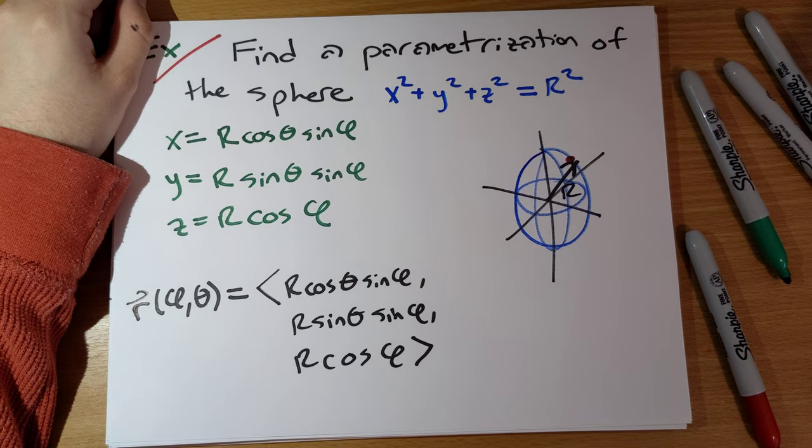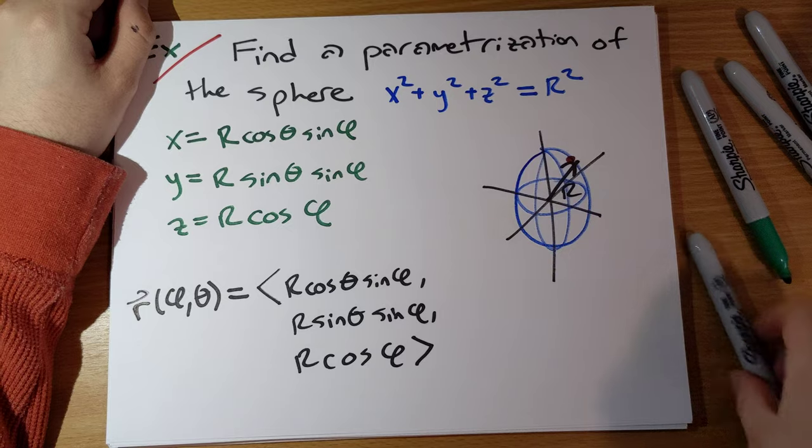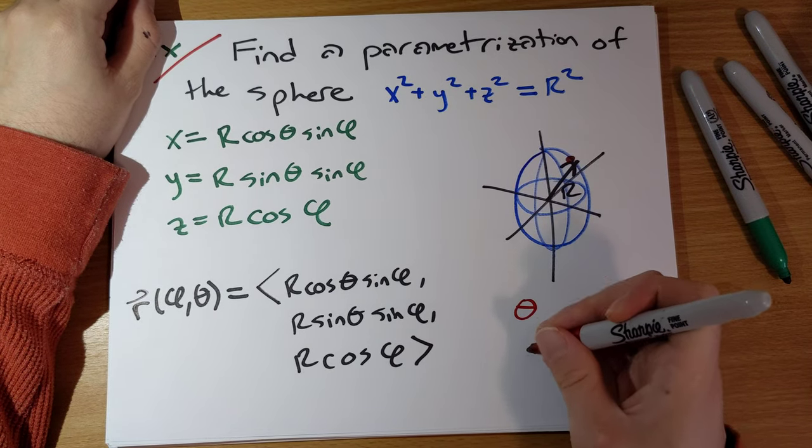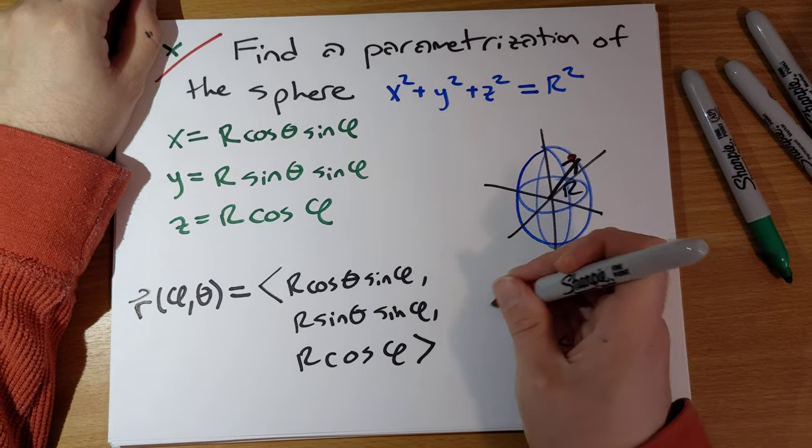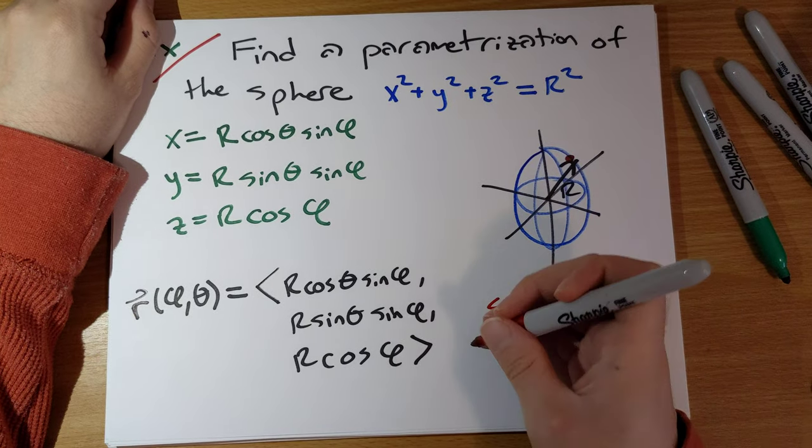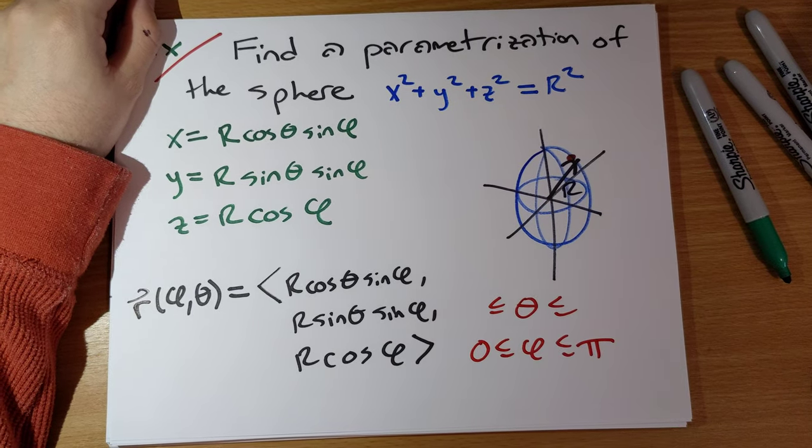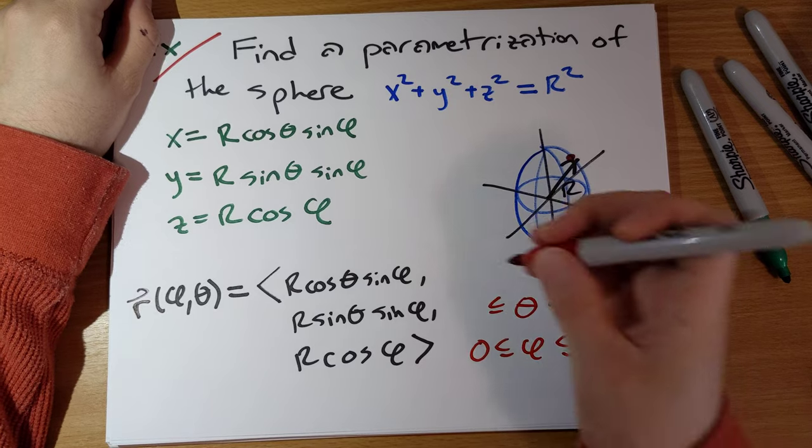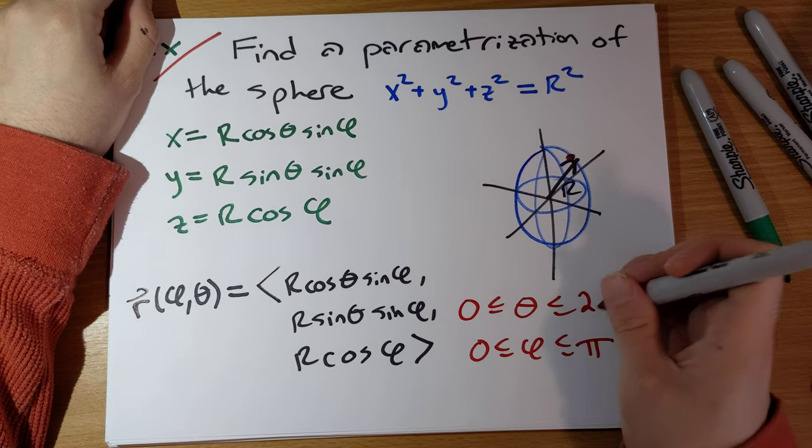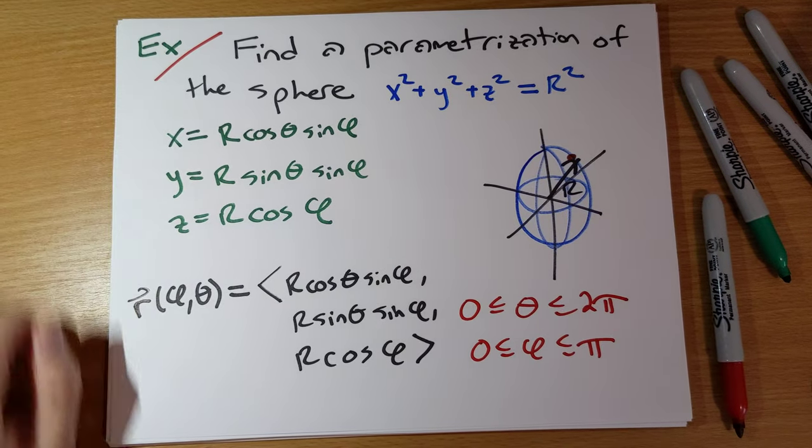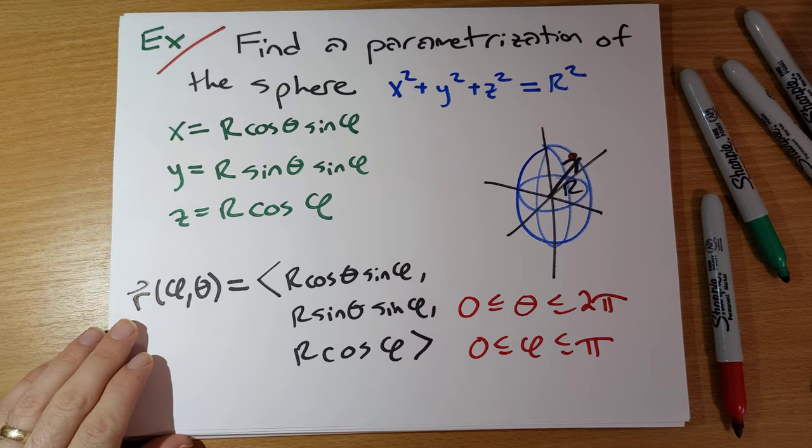And so we have bounds on theta and phi. It's the usual bounds here. Phi runs from zero to pi, and theta runs from zero to two pi. So here's our parameterization of the sphere.